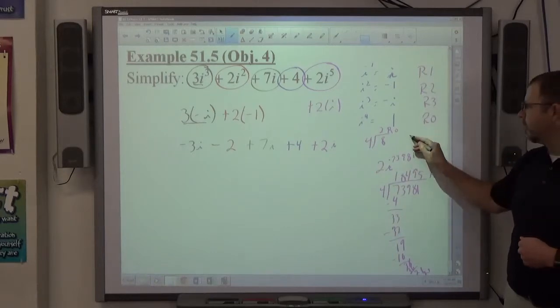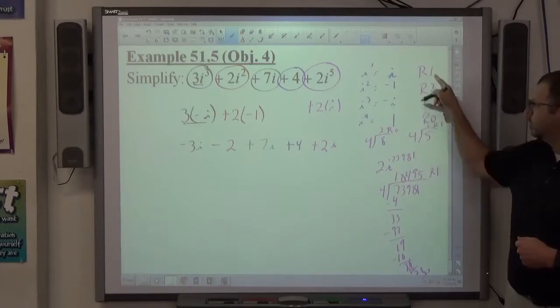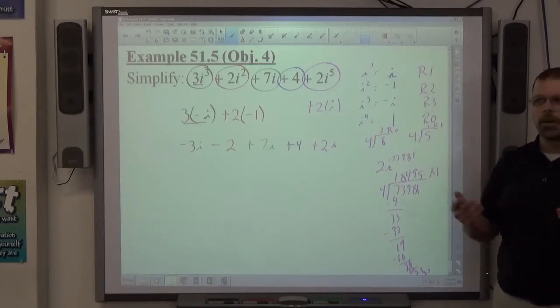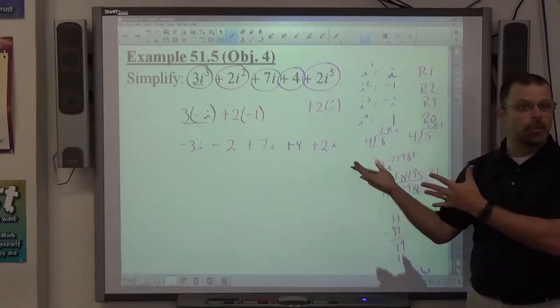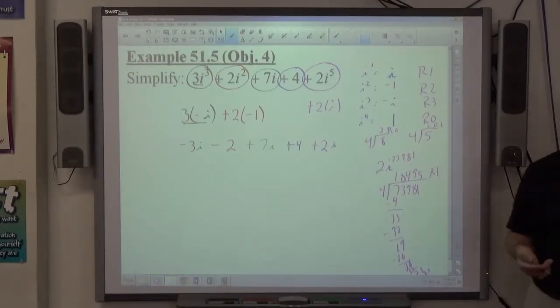2 to the 5th power, 4. Or i to the 5th power. 1 remainder 1, first power. Alright. So just know if it's a huge power of i, they don't do that in the book, but they might eventually at some point in your life do that. That's how you handle it.